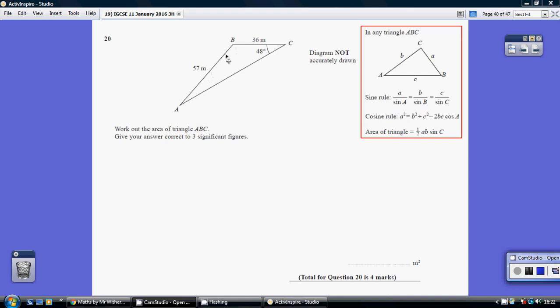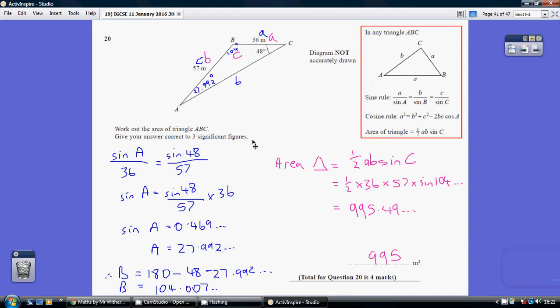I can use the sine rule because I have a pair - an angle and the opposite side. Using the sine rule, I'm going to say that sin A, so sin of this angle here, sin A over 36 equals sin 48 over 57.